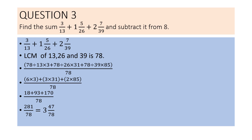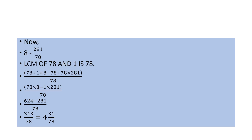Solving further, we get 281 by 78. Changing it into a mixed fraction gives 3 and 47 by 78. Now moving to the next part: we need to compute 8 minus 281 by 78.